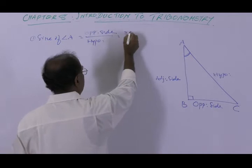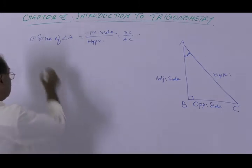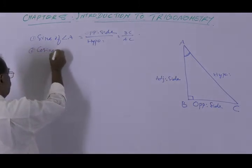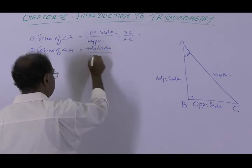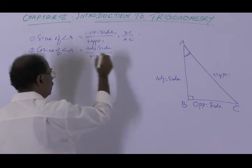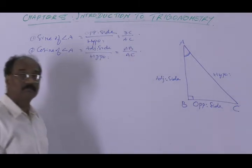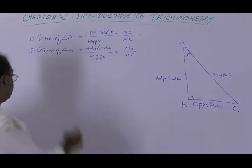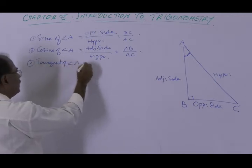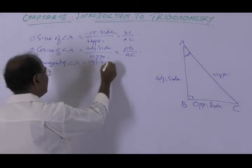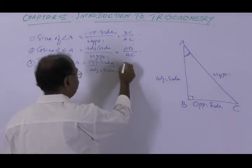The second ratio is cosine of angle A, which is equal to the adjacent side divided by the hypotenuse, which is AB divided by AC. The third ratio is tangent of angle A, which is equal to the opposite side divided by the adjacent side, which is BC divided by AB.